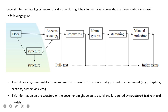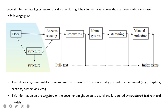The process for generating the logical view involves: removing spaces and stop words, separating noun groups, applying root stemming, then manual indexing to extract index words. Some documents may have structure such as chapters, sections, and subsections, or hypertext structures. This structure can be extracted as it provides useful information during retrieval, and is required by structured text retrieval models.